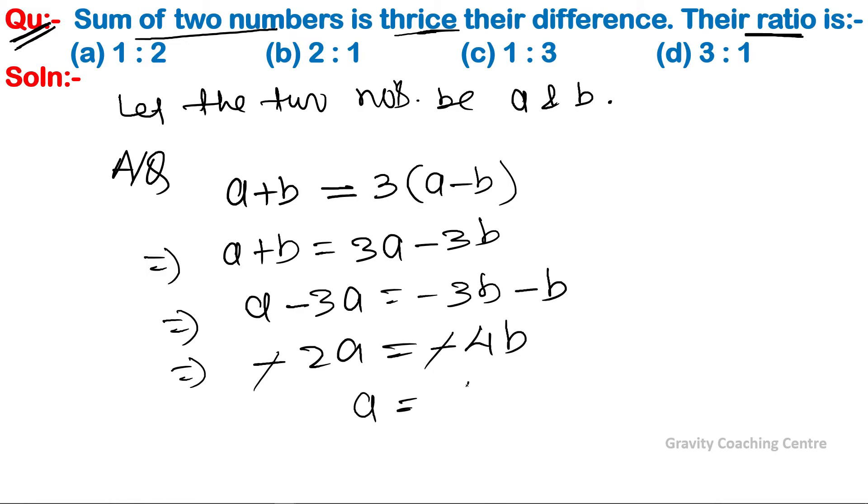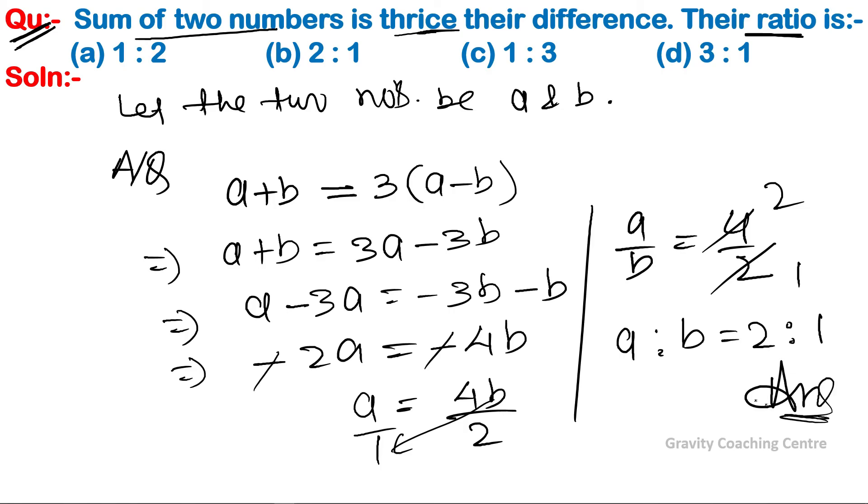So a equals four b upon two. Taking a upon b, we get four upon two, which cancels to two by one. So a ratio b equals two ratio one. Answer: Option b is the correct answer.